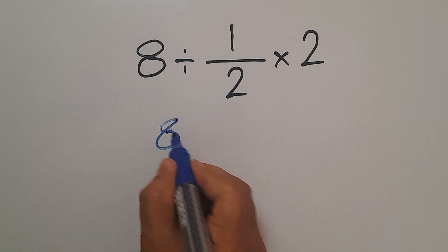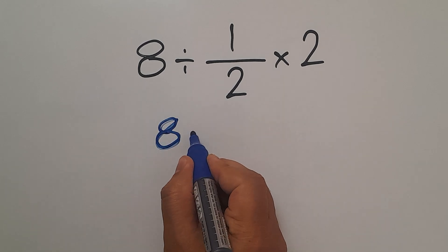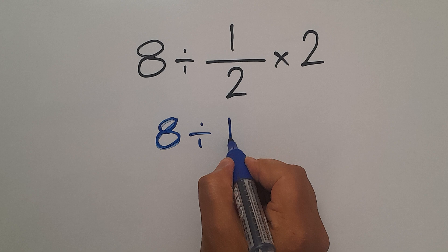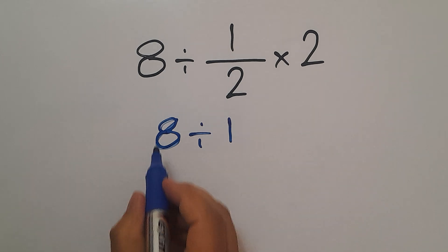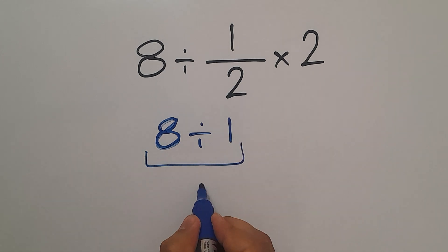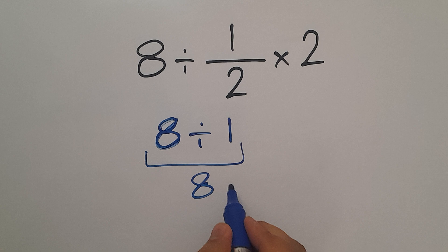So 8 divided by just 1, and 8 divided by 1 equals 8, but this answer is not correct.